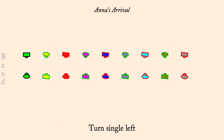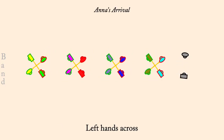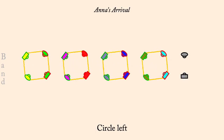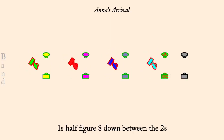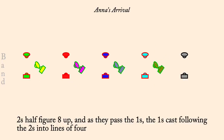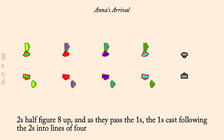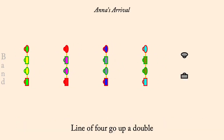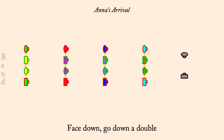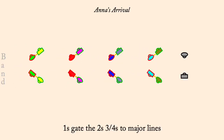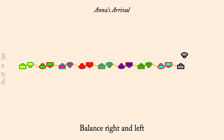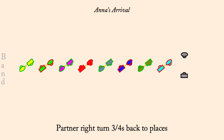Left hands across. Circle left. Ones half figure eight down between the twos. Twos half figure eight up into the middle of a line of four as ones cast to ends. Line of four go up the hall. Line of four go down the hall. Ones gate twos. Partner right three quarters to a wavy line. Balance right then left. Partner right three quarters to places. Turn single left.